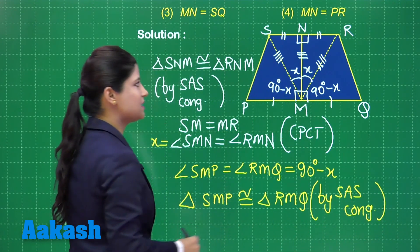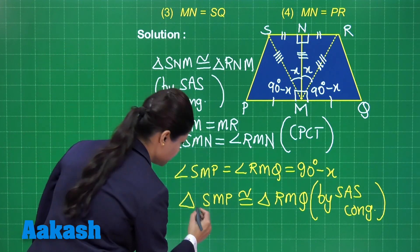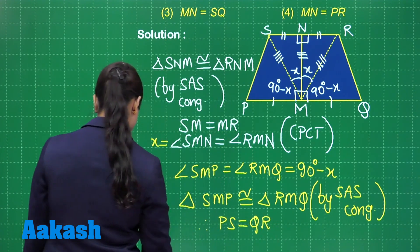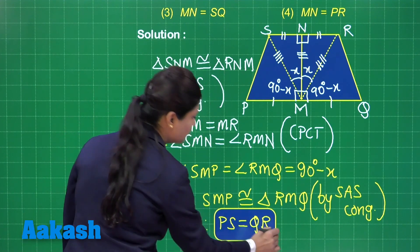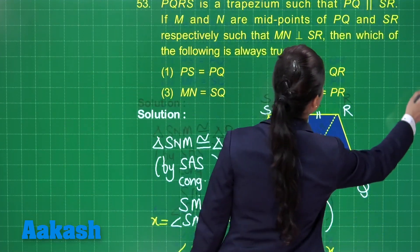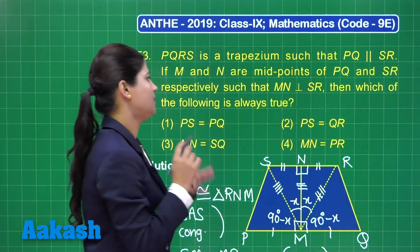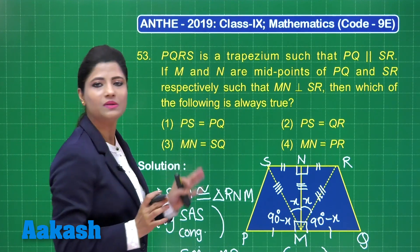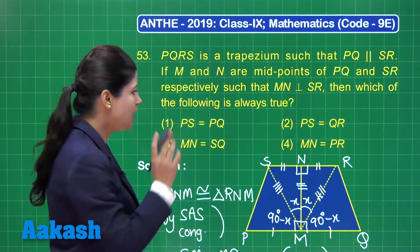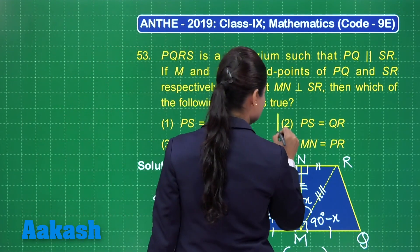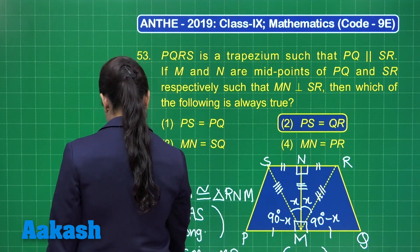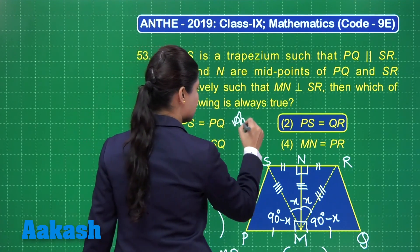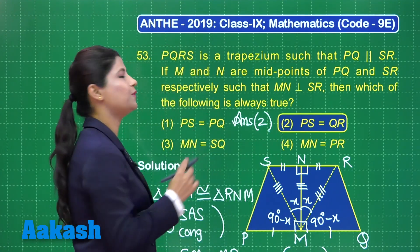Since triangle SMP is congruent to triangle RMQ, through CPCT we obtain PS equal to QR. This is a clear condition that PS will always be equal to QR. When observing the four options, we can clearly see option number 2 states PS equal to QR. The rest of the options depend on the dimensions of the trapezium, but PS equal to QR is always true. Mark the answer as option 2.